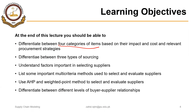You should be able to differentiate between different types of sourcing and understand factors important in selecting suppliers. We will also list important multi-criteria methods used to select and evaluate suppliers, briefly discuss two of these — AHP (Analytic Hierarchy Process) and the Weighted Point Method — and discuss different levels of buyer-supplier relationships.